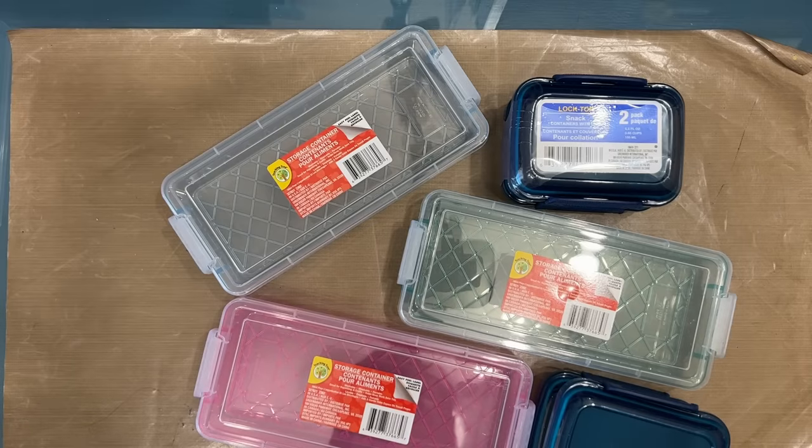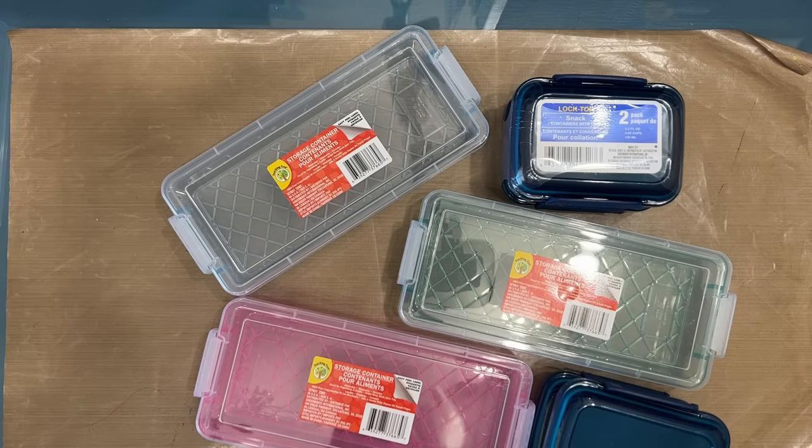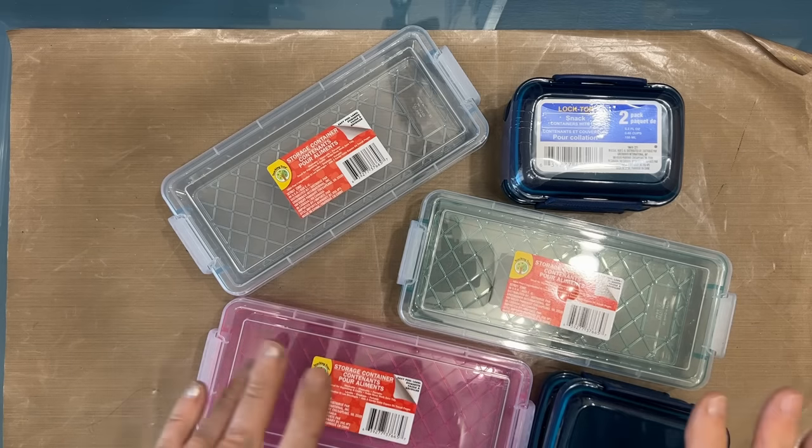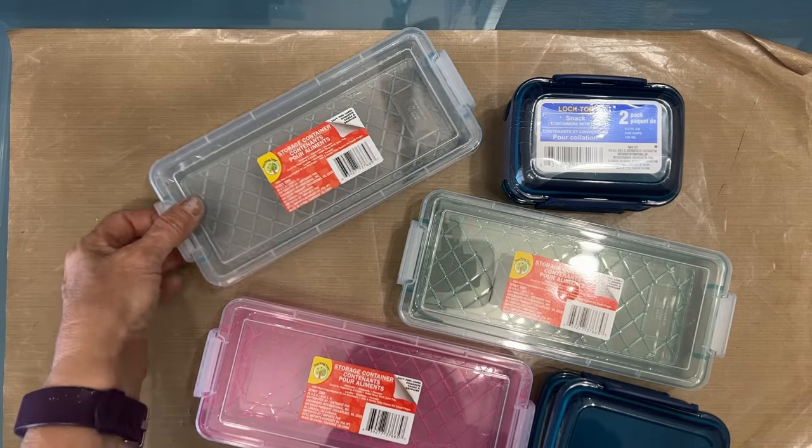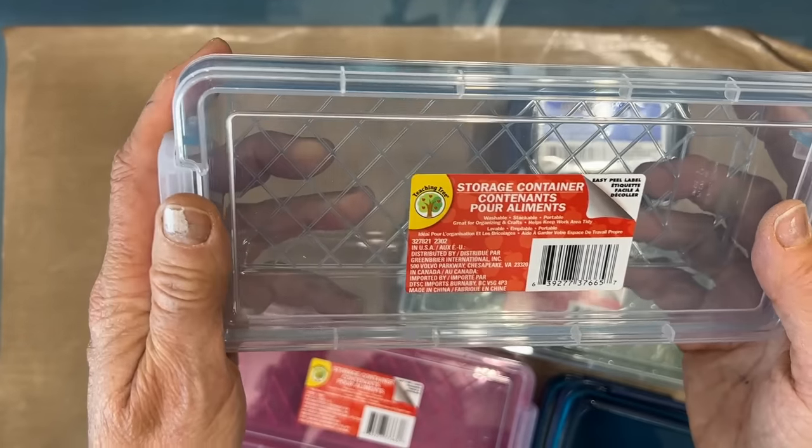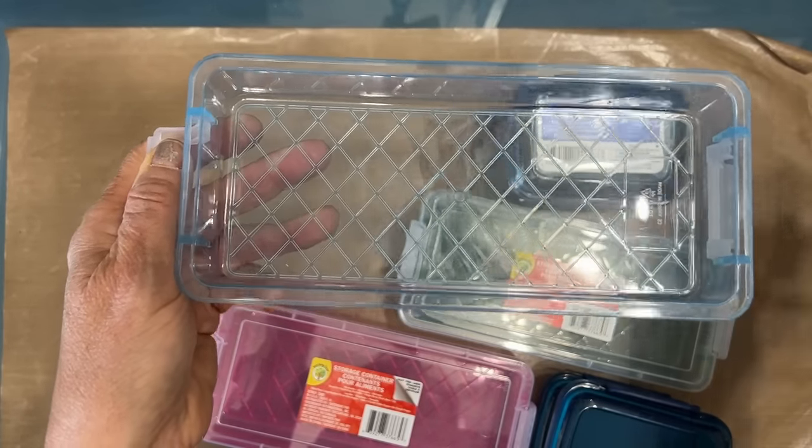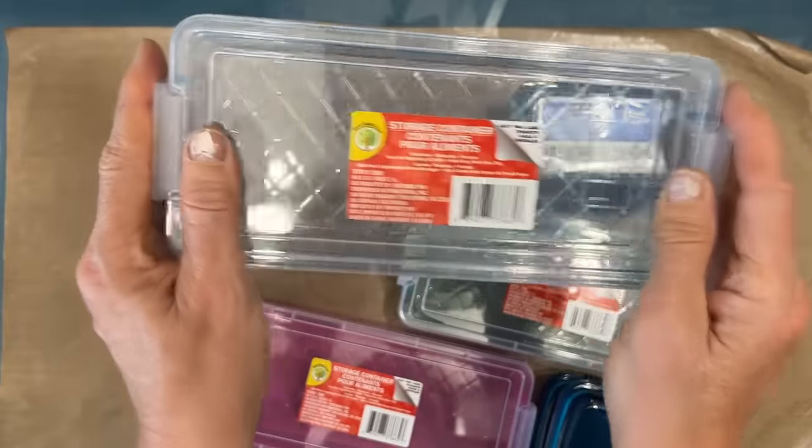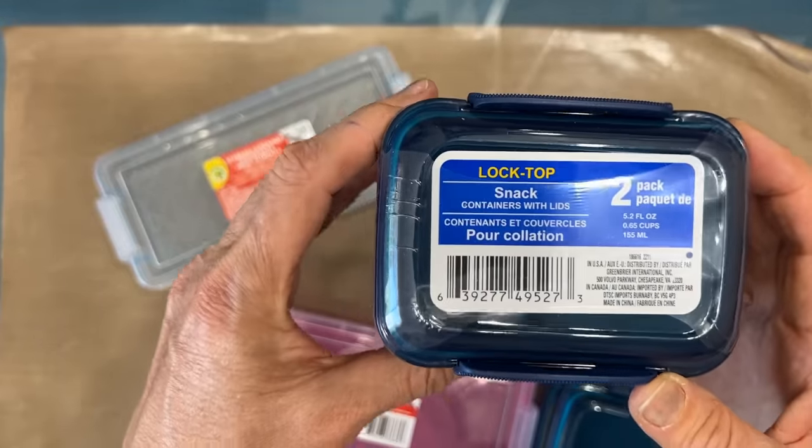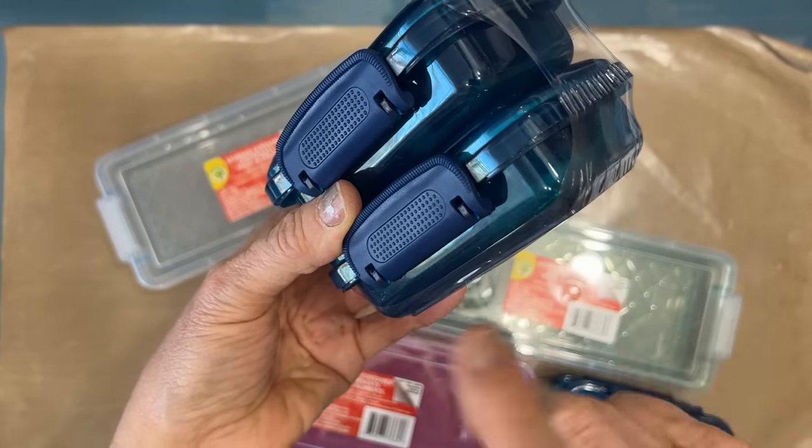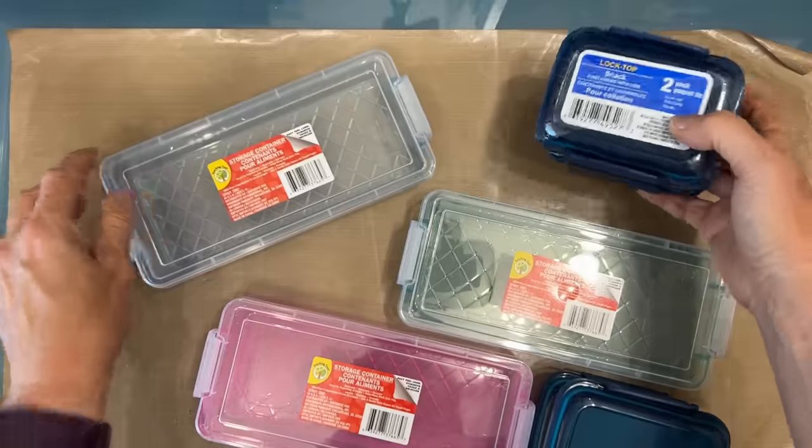I'm so excited. I just got back from Dollar Tree and I found some great storage containers that I know I can use in my studio to store my craft supplies. So there are two different types of containers here. We have these storage containers from Teaching Tree and they open like this. You buy them singly. And these lock top snack containers with lids. And this comes in a two pack. And there are other colors. There's a gray. There's other colors.